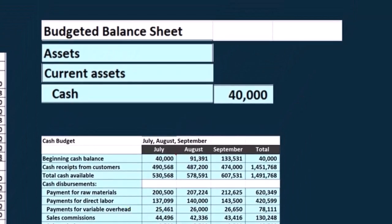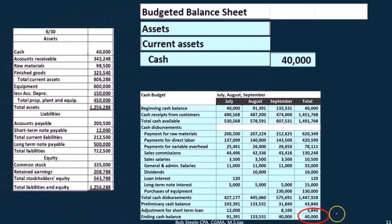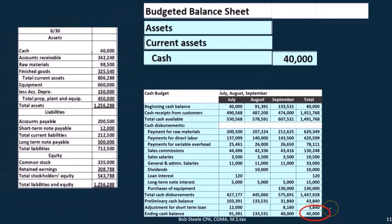This is the beginning $40,000 and this is the ending $40,000. The reason they're the same is because we made it the same in order to keep our minimum balance at $40,000 by taking out a loan — in this case, the loan at the end for $8,160.